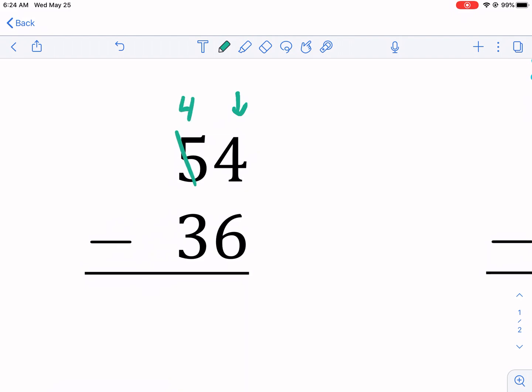I'm going to make that a 4. Essentially, I'm making it 40 instead of 50. And I'm going to make this 14 instead of 4. I did 4 plus 10 equals 14. I borrowed 10 from the tens place. Now I can do 14 minus 6, which is 8.